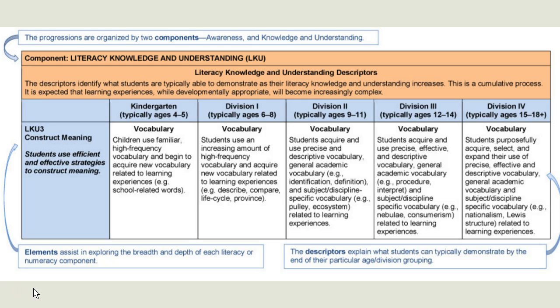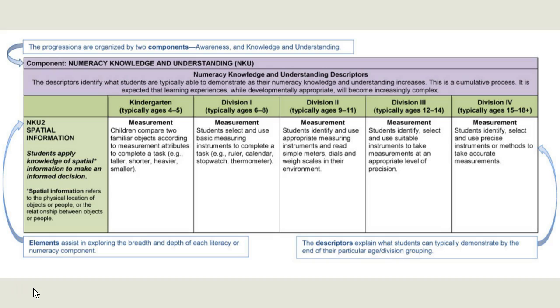On this slide you'll see a screenshot of the numeracy progressions — just a small sample. Across the top in pink there is one of the components of literacy: literacy knowledge and understanding, with a short description provided. Within that it's further broken down into one of its elements, which is 'construct meaning.' Within the construct meaning element, it provides descriptors at the various age or division groupings, so we can get a sense of what we would expect students to demonstrate by the end of their particular age or division grouping. Numeracy is organized in the same way — the component at the top, then broken down into the element.